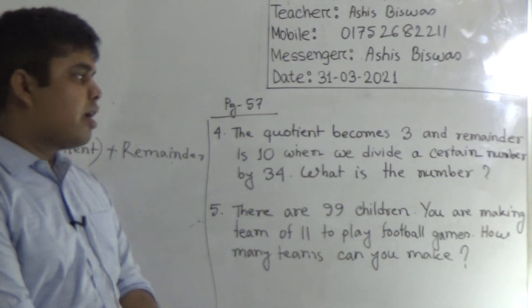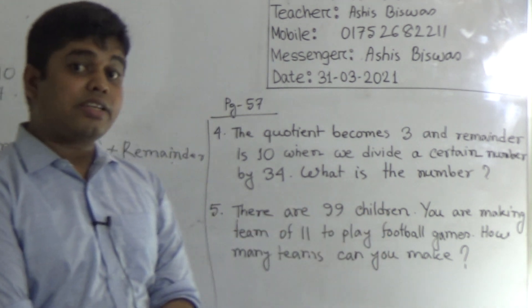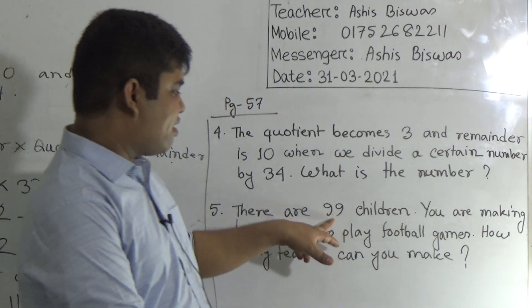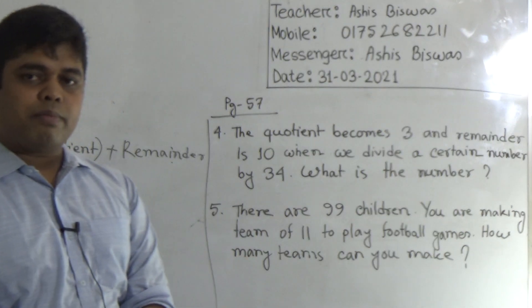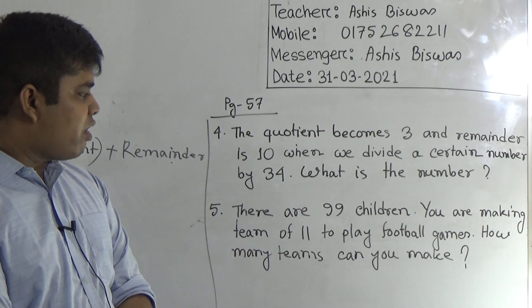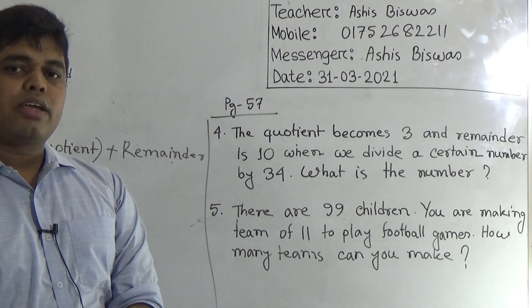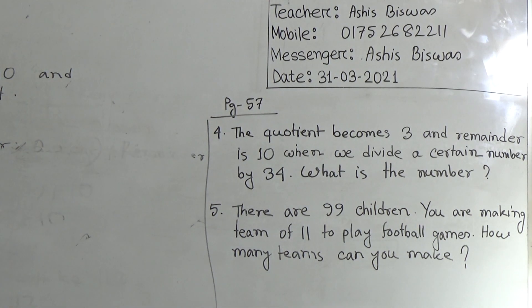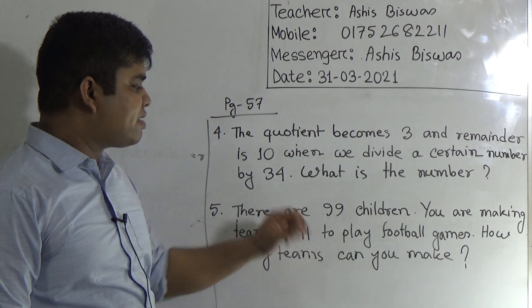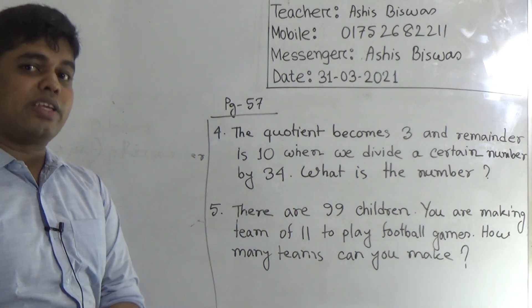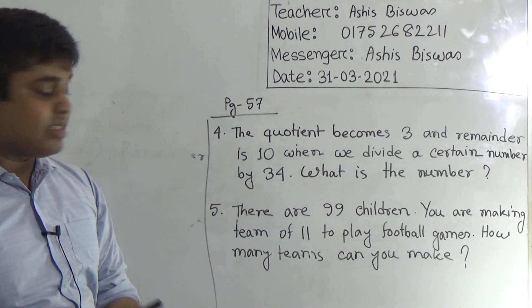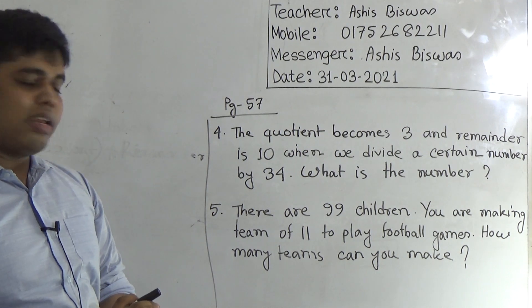By using these 99 children, how many teams can be formed? Each team contains 11 members. It is so easy math. One team has 11 members. By this information, we can say 11 children make one team. Therefore, 99 children make, we divide 99 by 11 and we get the answer. Write: 11 children make one team. Therefore, 99 children make, we divide 99 by 11.